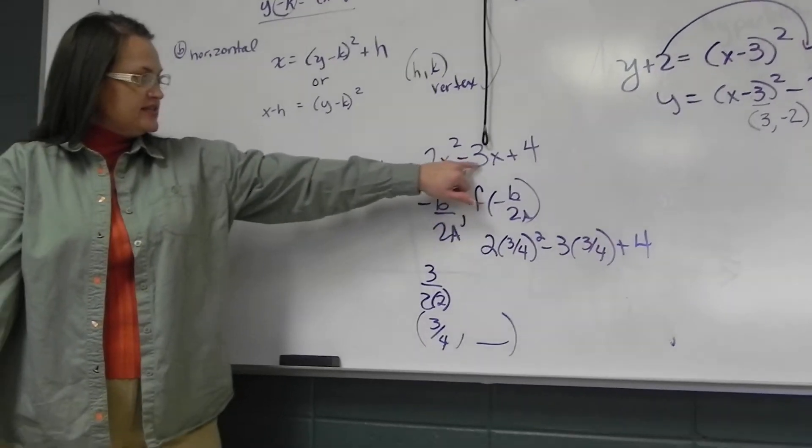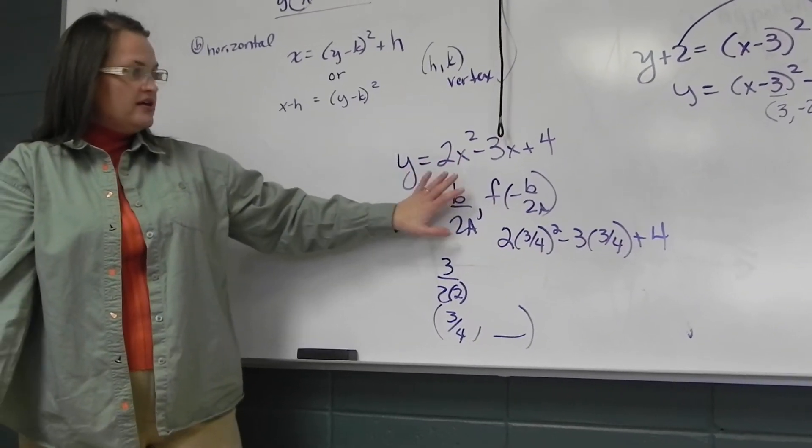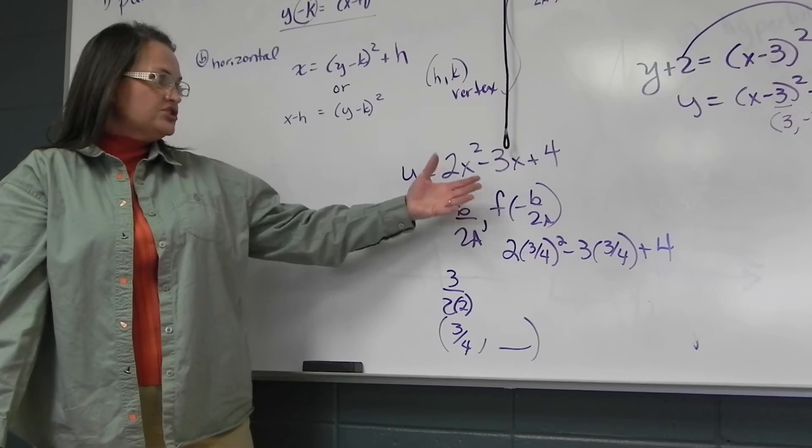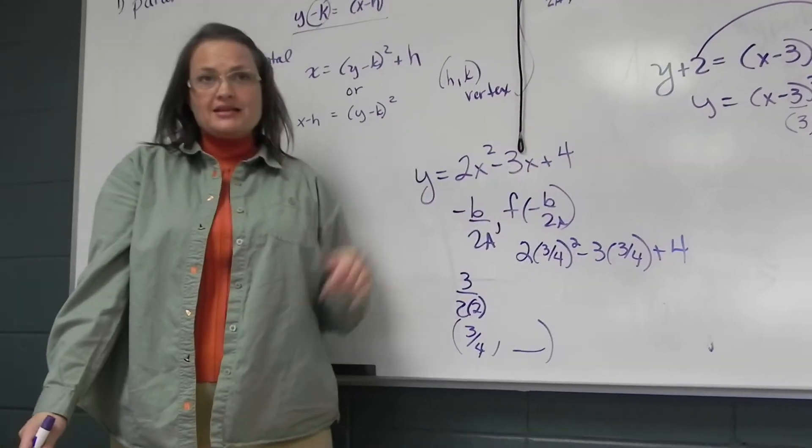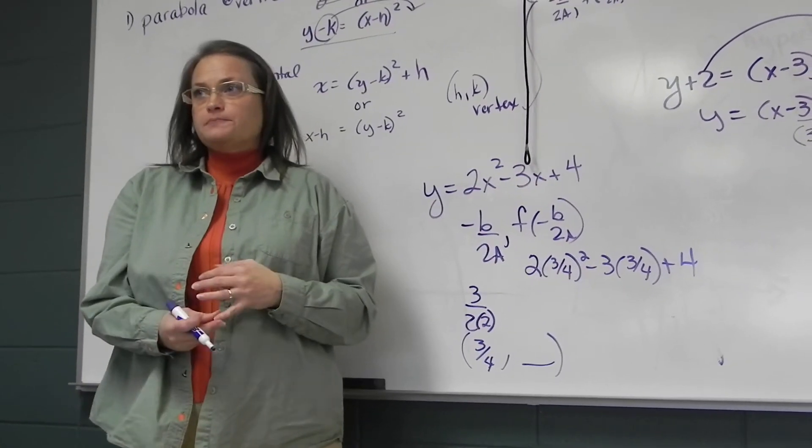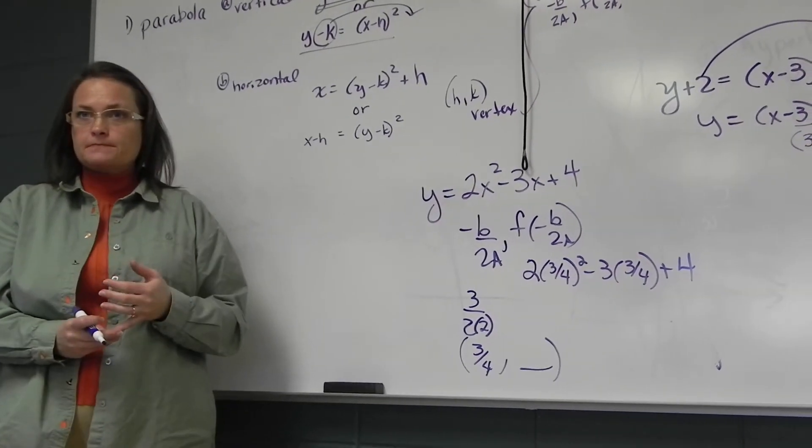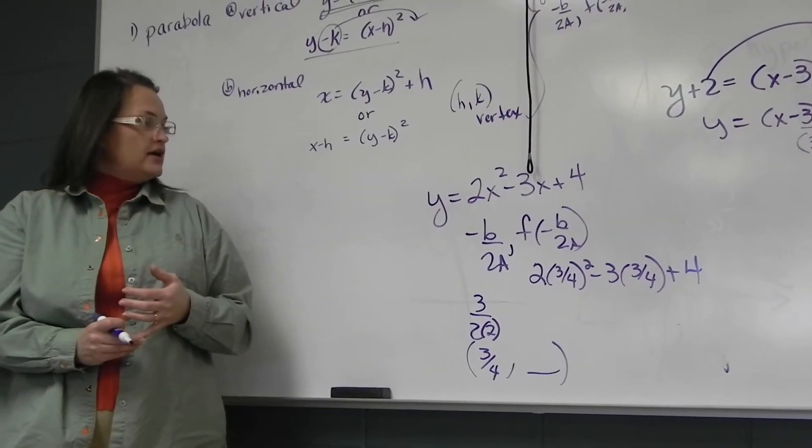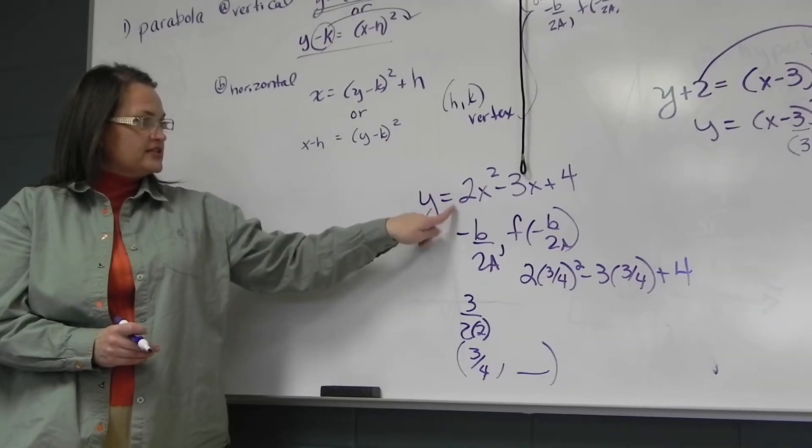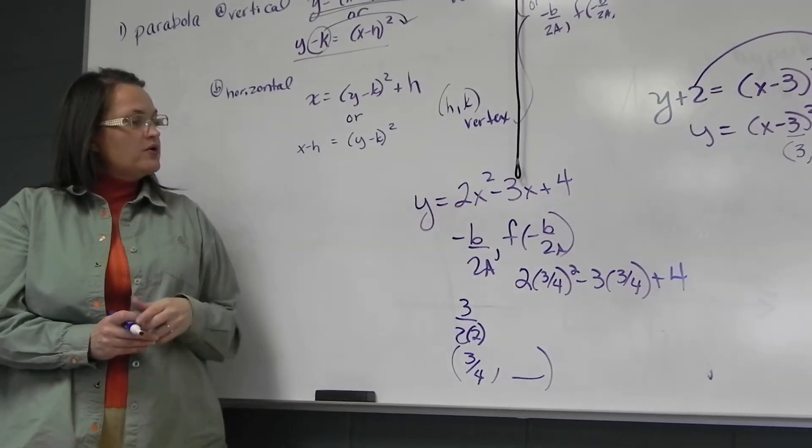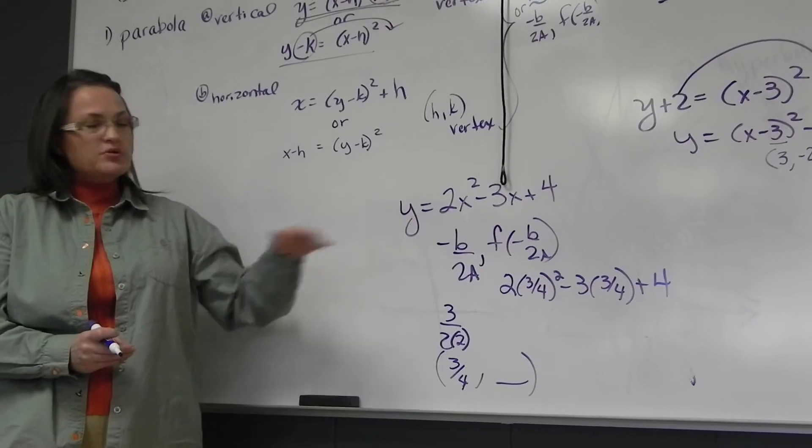Remember a vertex is negative B over 2A. That's your X shift. And then to find your Y shift, you have to plug that back into the X's and work it out. Alright, any questions on that? I know it to be an upright parabola that's positive, the leading coefficient, and a little skinnier because of the 2.